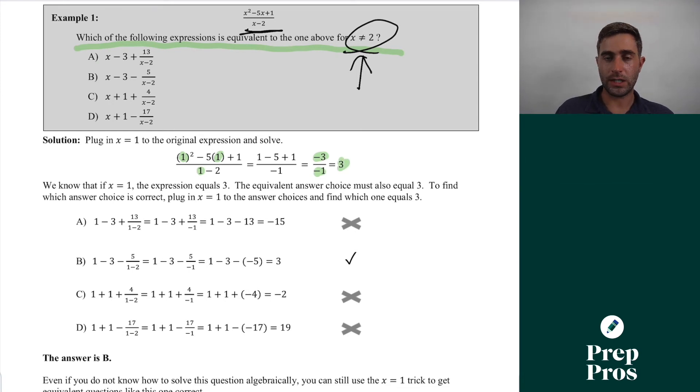Now from here, as I said, this is naturally going to take a little bit of time, but we're very much guaranteed to find the right answer if we do it. I simply plug one into each of the answer choices. And as you can see here in B, we're able to plug one in here, and we see that this also equals three.